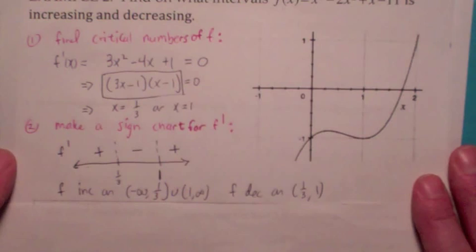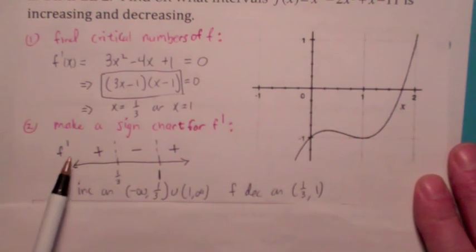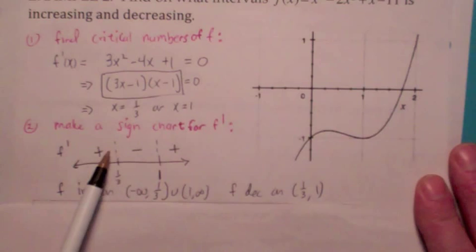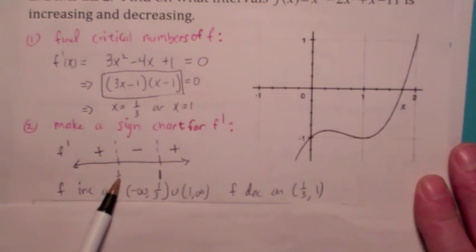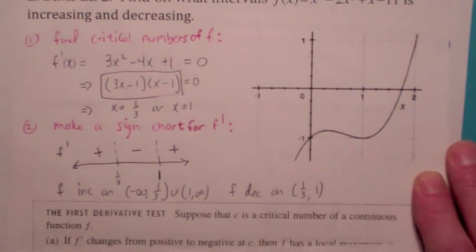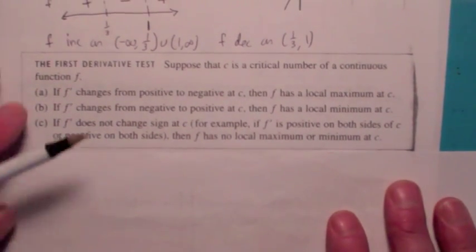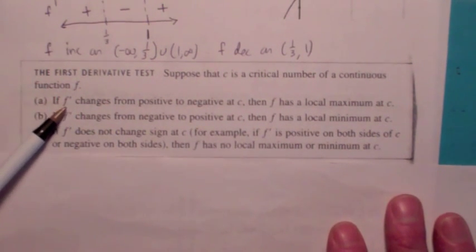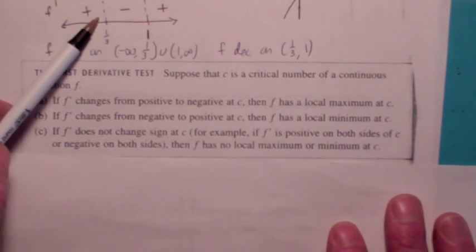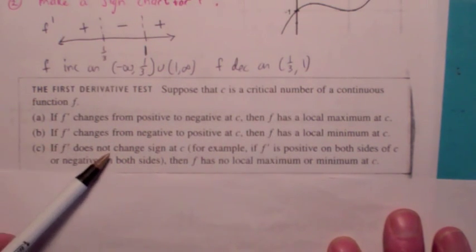Looking at the graph of f(x), we have a local max at x = 1/3, because the derivative changes from positive to negative there — f is increasing then decreasing at a critical number. We have a local min at x = 1 because f is decreasing then increasing. This is precisely what the first derivative test says: if f' changes sign from positive to negative at a critical number, you have a local max; if it changes from negative to positive, you have a local min.